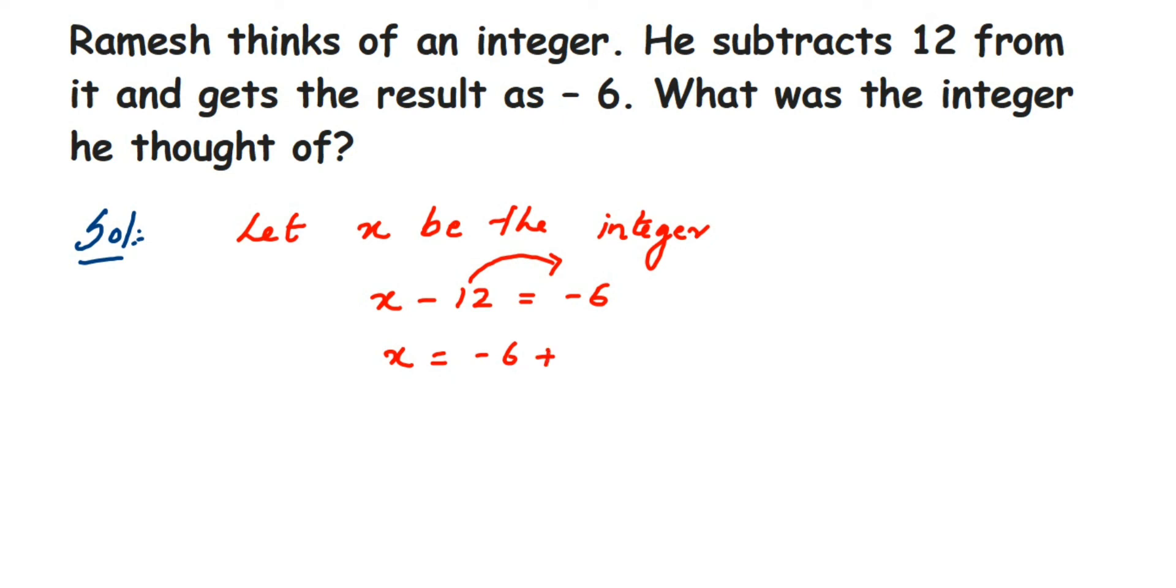Now we're adding integers with different signs, so we subtract: 12 - 6 is 6. The sign will be positive because 12 is greater here. So the integer which Ramesh thought of is 6.